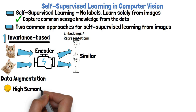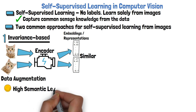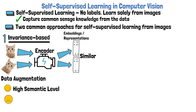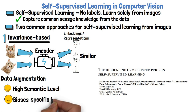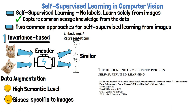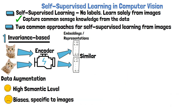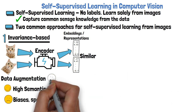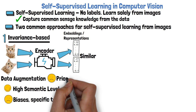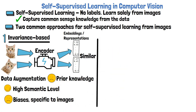This invariance-based approach proved to reach high semantic levels. However, it has biases as shown in previous research, and is specific to images — meaning it's not clear how to generalize this approach to other types of data. Additionally, data augmentation usually requires some level of prior knowledge.